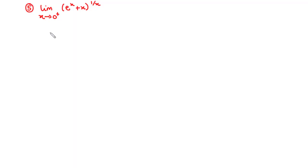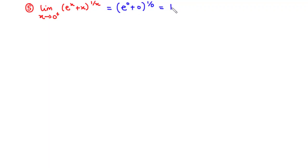First of all, let's try direct substitution. We plug in zero wherever we see x: e to the power zero plus zero, all exponent 1 over zero. Now e to the power zero is 1, and 1 plus zero is 1, so we have 1 to the power 1 over zero, which is 1 to the power infinity. We don't know what this value is — this is an indeterminate power.